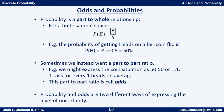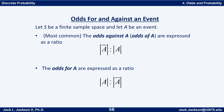Probability and odds are two different ways of expressing the level of uncertainty. The most common way we talk about odds are odds against an event. If they say what are the odds of event A, or the odds against A, they're expressed as a ratio of the size of the complement of A to the size of A. The odds for an event are the reciprocal — the size of A to the size of not A.